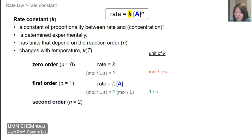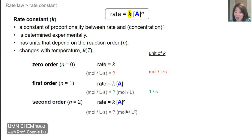For a second order reaction, rate equals K times concentration of A squared. Putting in the units for rate on the left and the squared concentration units on the right — mol²/L² — and solving for K's units so that both sides balance, we find that K has units of L/(mol·s) for a second order reaction.